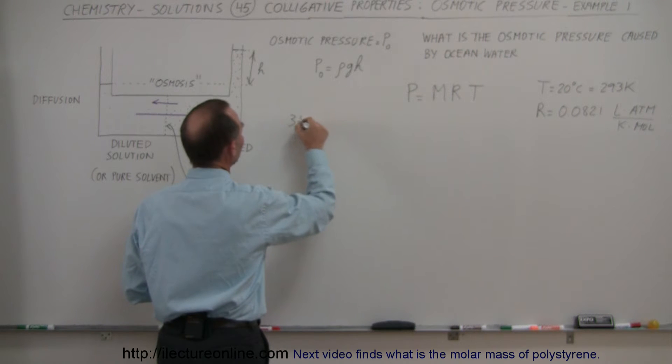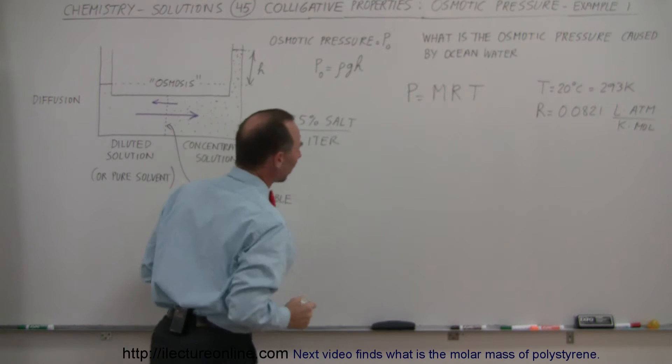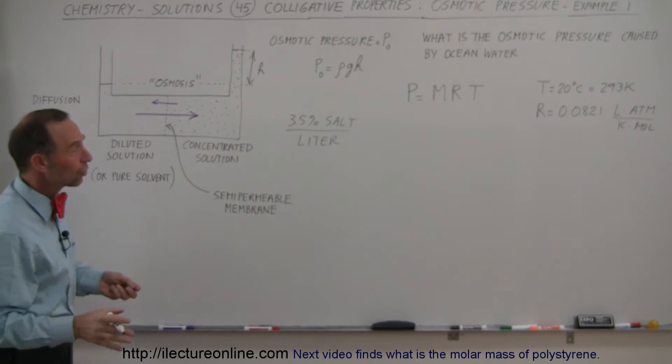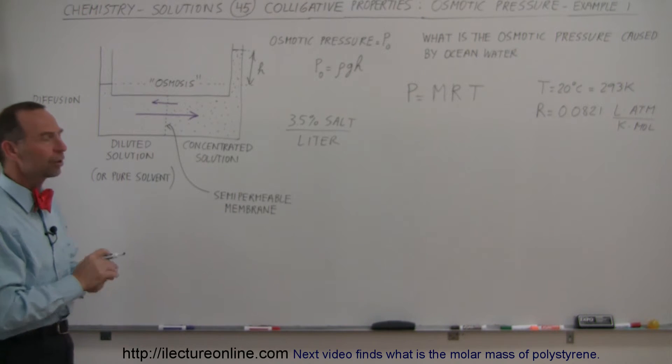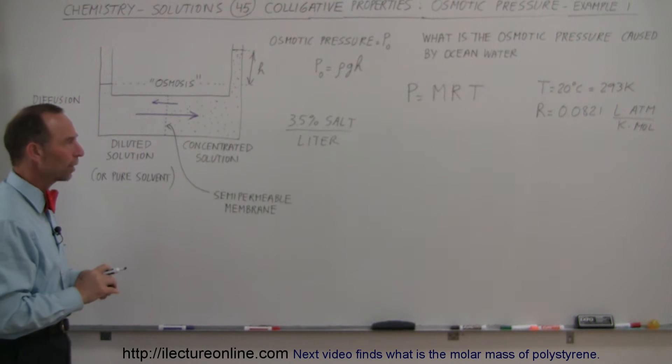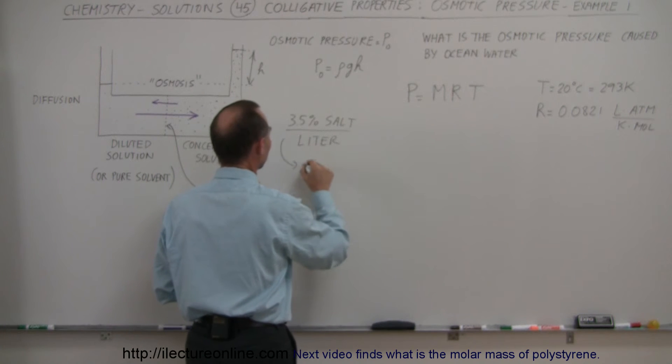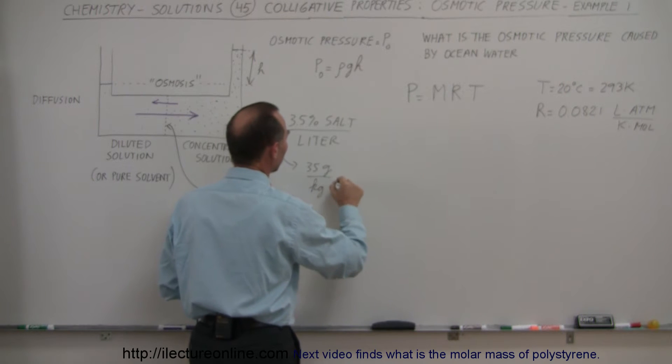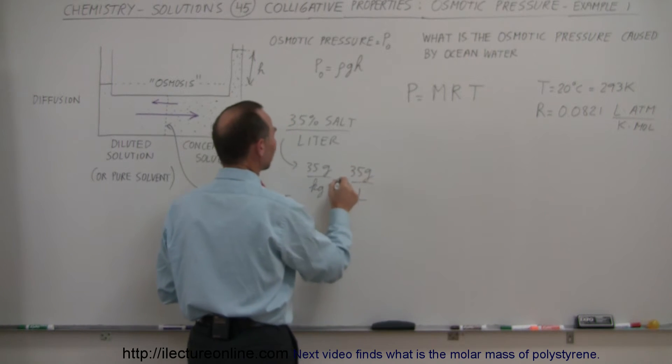And so we have about 3.5% salt per liter of ocean water. That's roughly, it depends what ocean you go to. There's differences in different areas. So 3.5% is a fairly good constant for most of the ocean water. That means that we have about 35 grams per kilogram or 35 grams per liter. Of course, now, I can't make an equal sign there, so I'll put the equal sign in quotation marks.